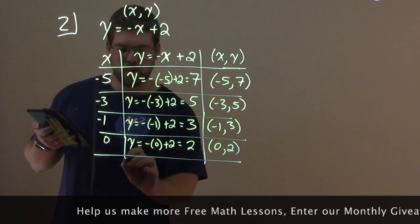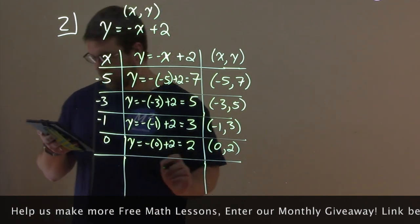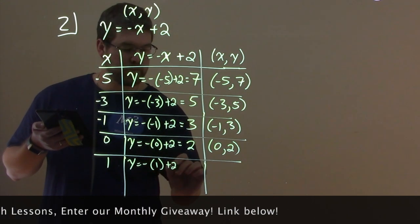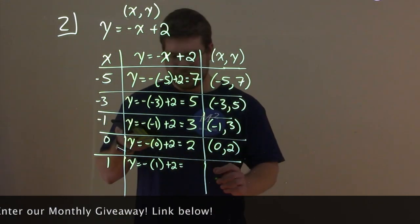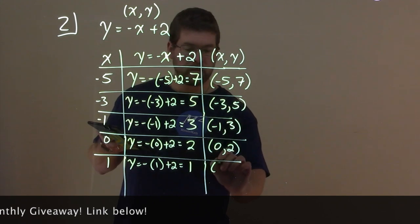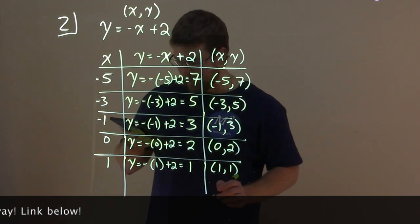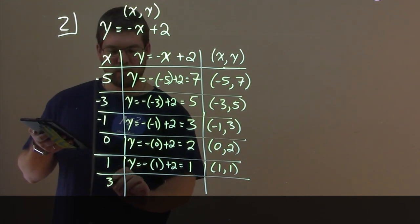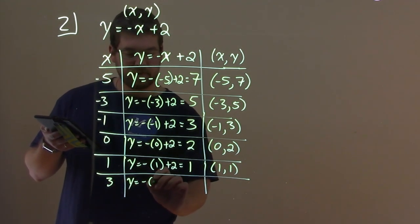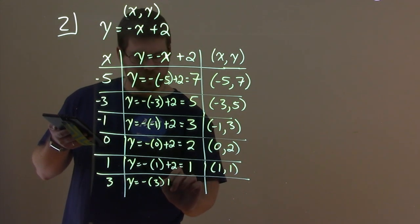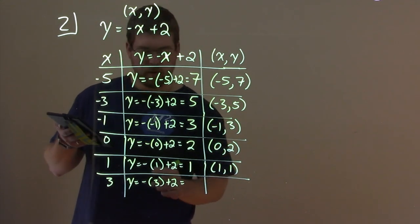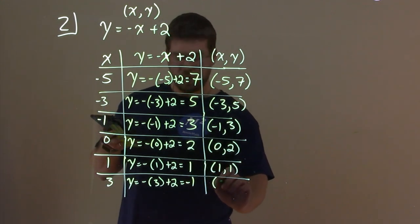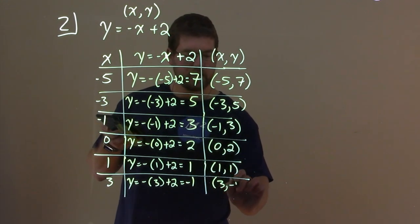Let's keep this gravy train going. Let's do 1. y equals negative 1 plus 2, and negative 1 plus 2 is 1. So this coordinate point is 1 comma 1. Two more points to go. We have 3. y equals negative 3 plus 2 equals negative 1. So our coordinate point is 3 comma negative 1.